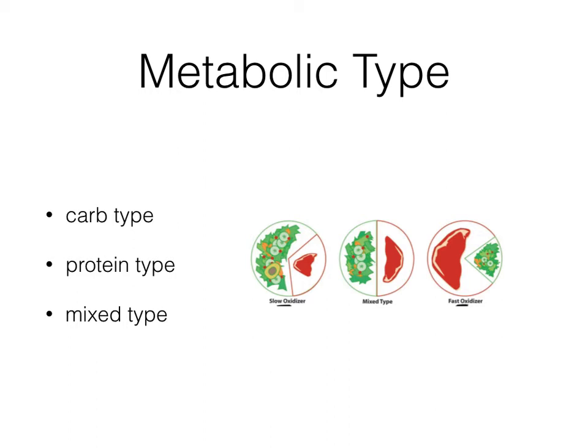Now remember when I say protein type or mixed type or carb type, you may wonder where the fats are. You have the fats usually when there is protein. Take for example a slice of meat — there's always marbling of fat on there. Or if you were to get proteins from nuts and seeds, they usually have fat but there's also proteins in there. So whenever you look at proteins it's either coming from meat, nuts, and seeds usually. Especially if you're vegetarian and you don't want to eat meat, that's fine — you could still get your proteins mostly from fats and seeds.